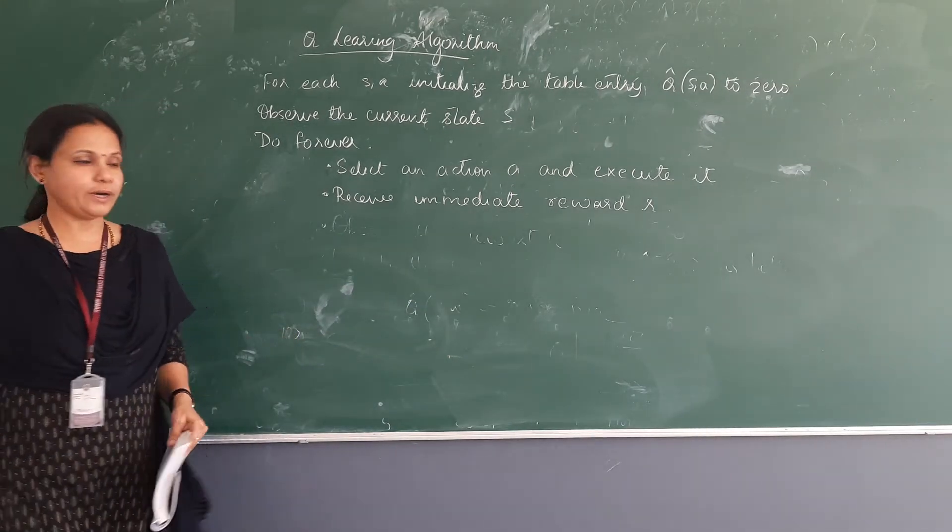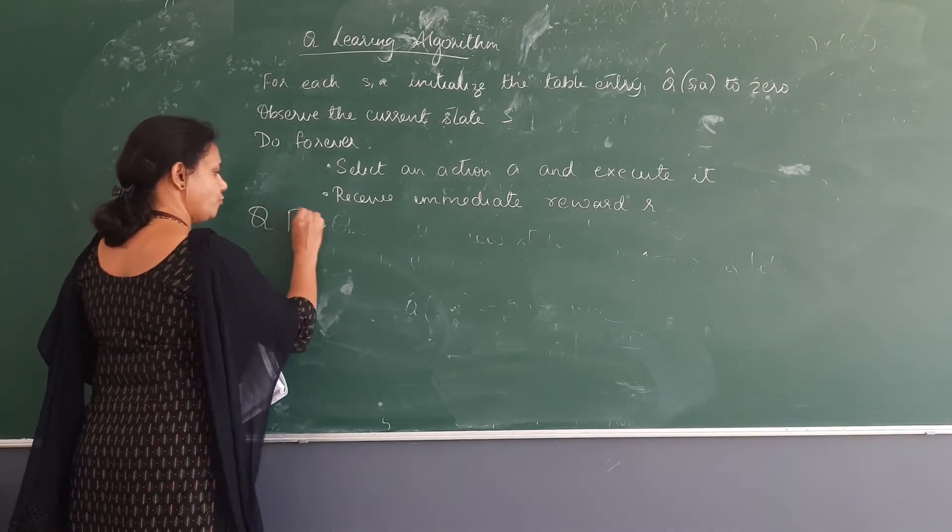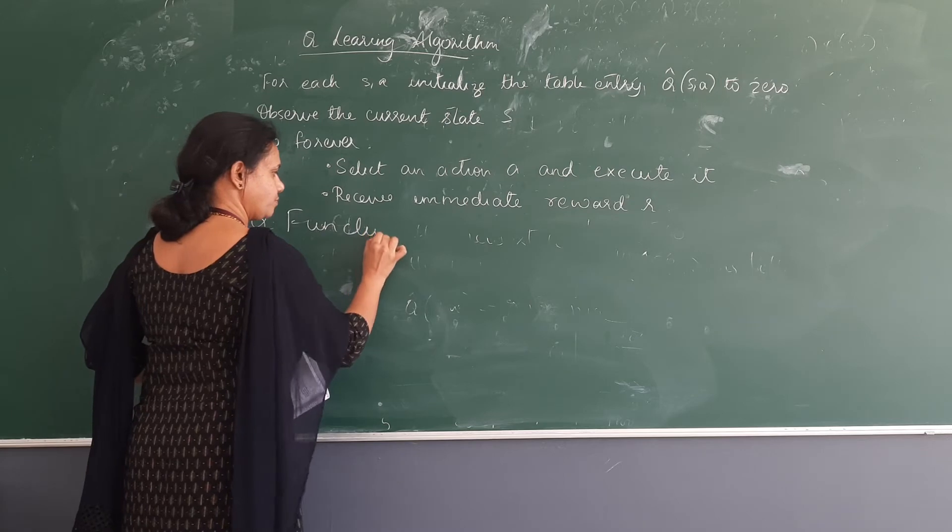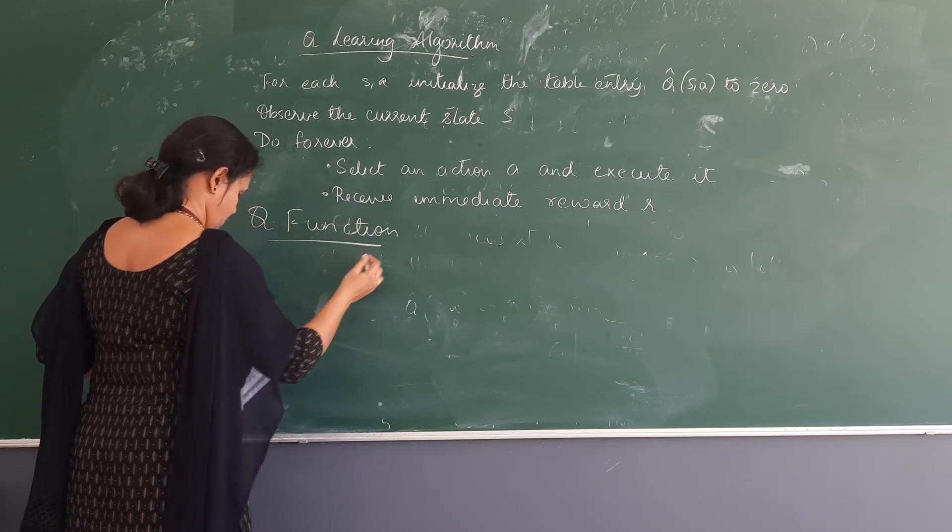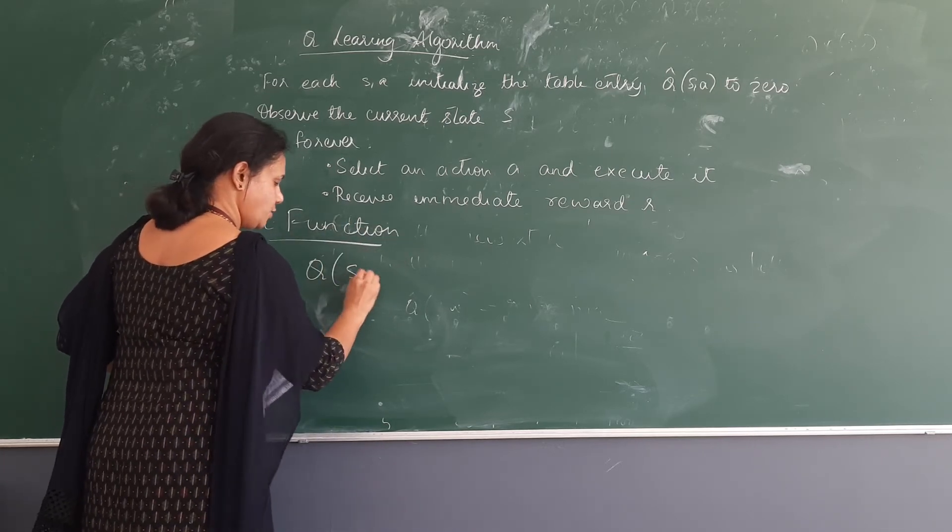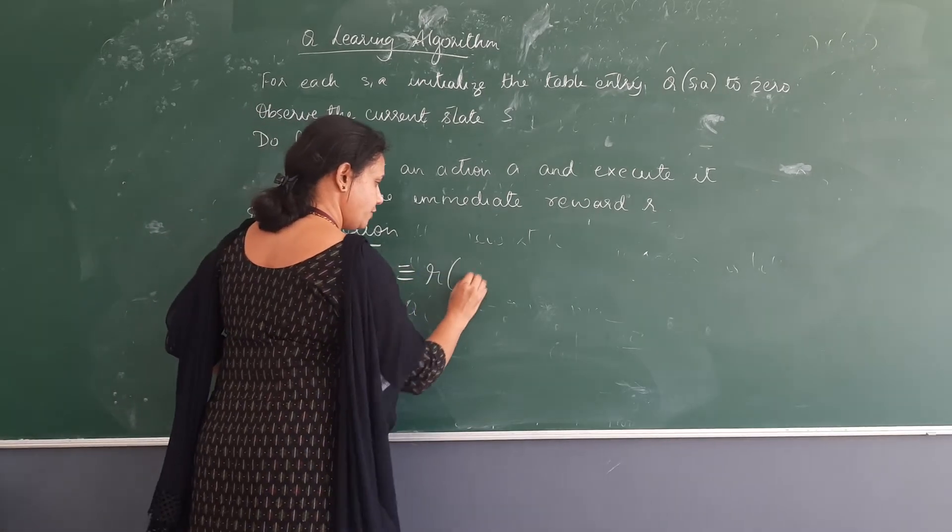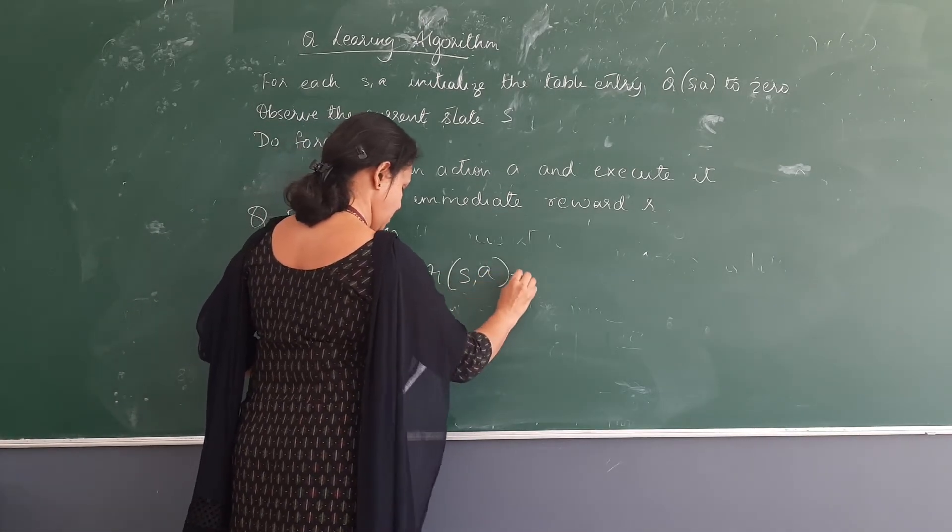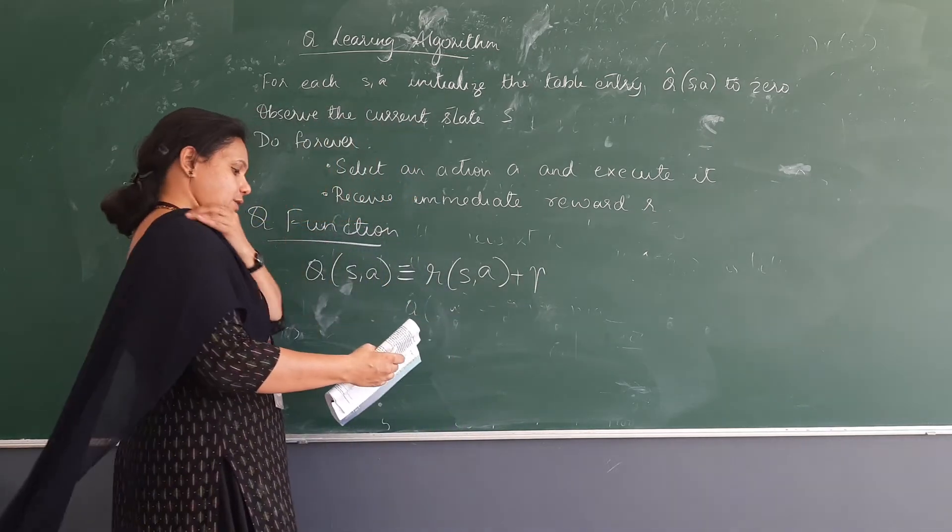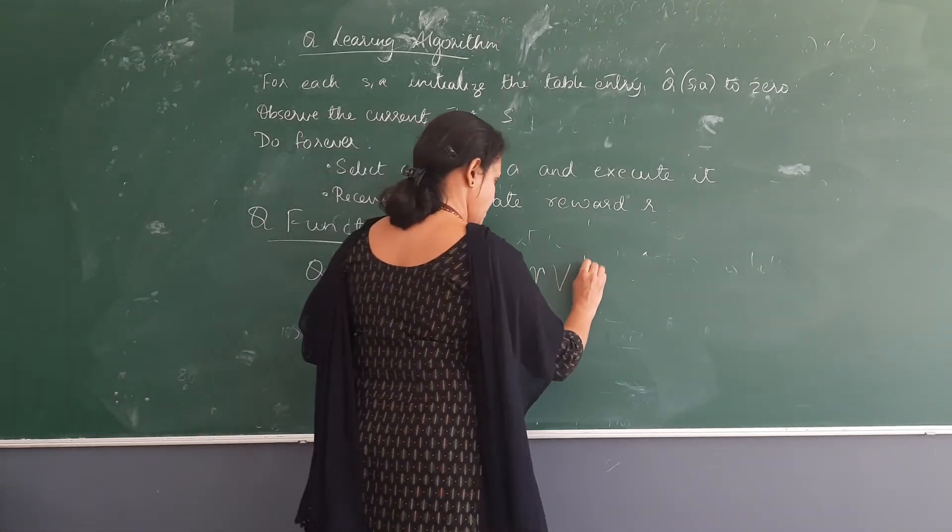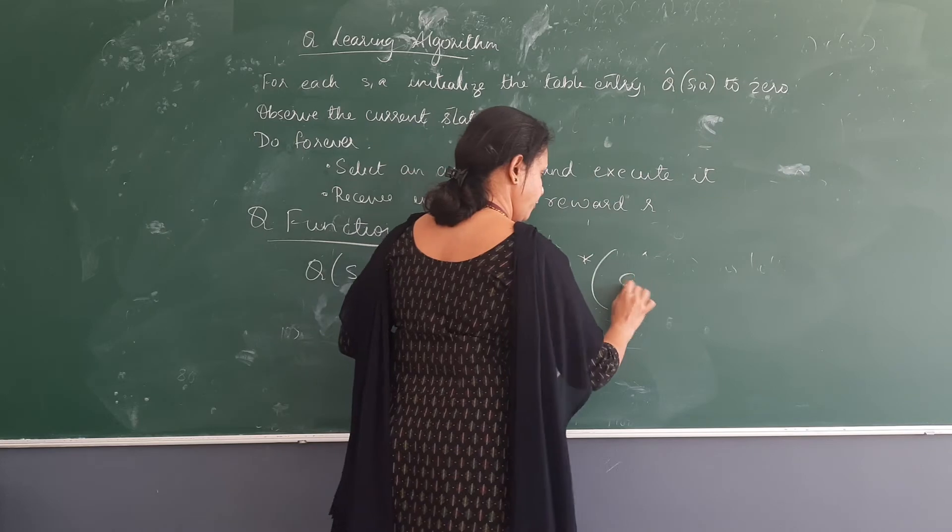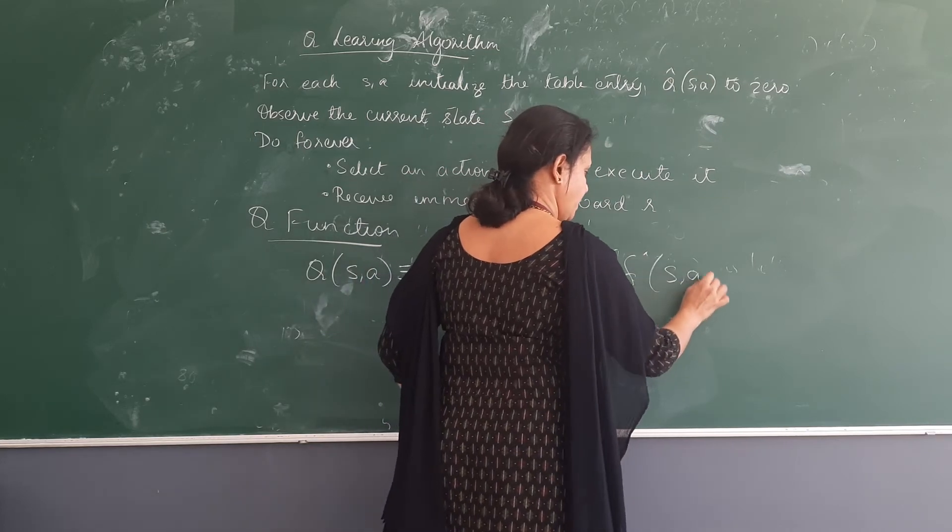The same thing what I have given there earlier. The Q function is: Q(state, action) is equal to R(state, action) plus gamma into V star, so the maximum of delta(state, action).